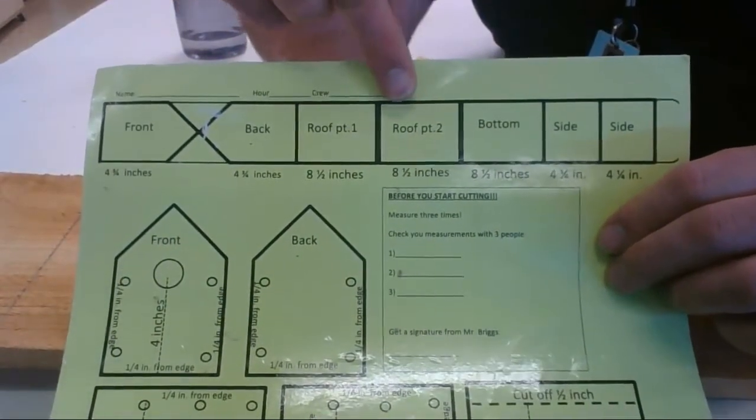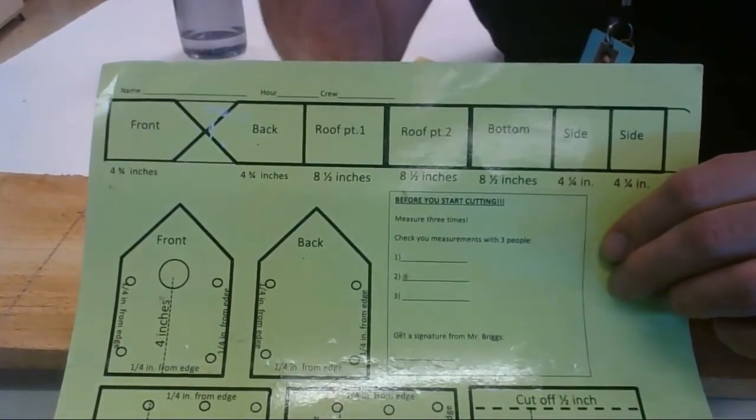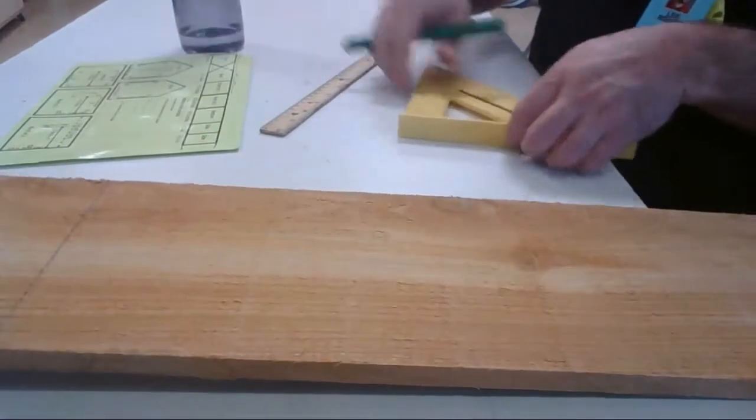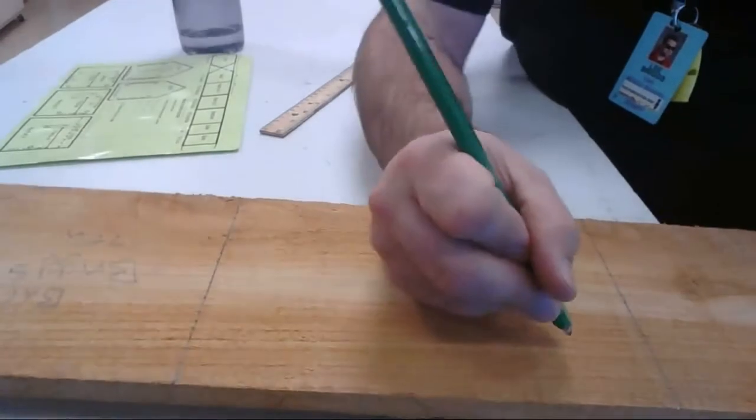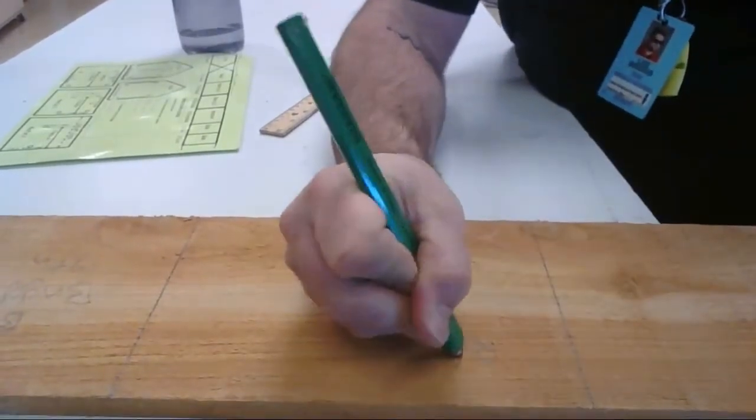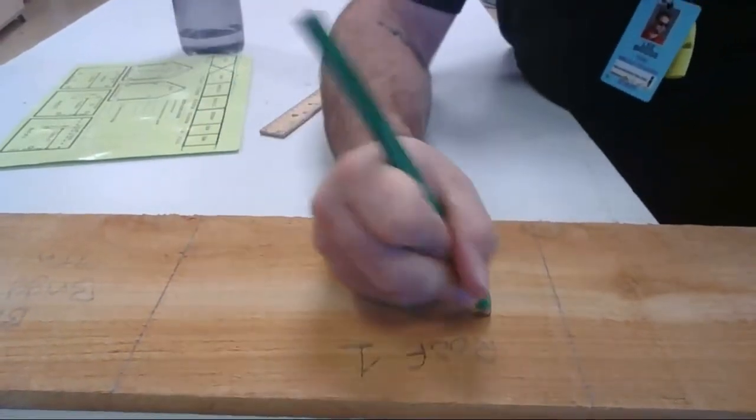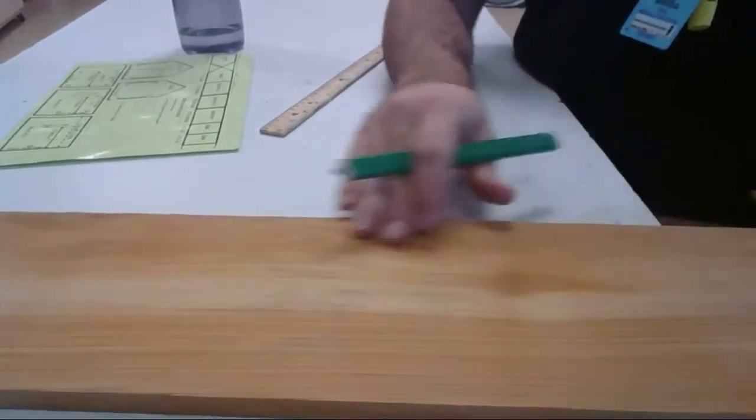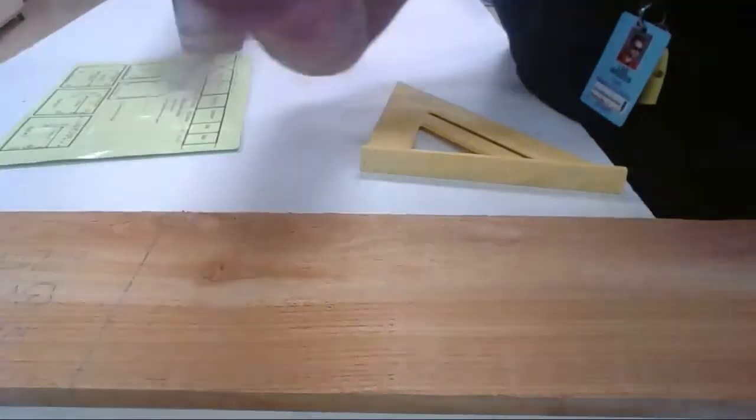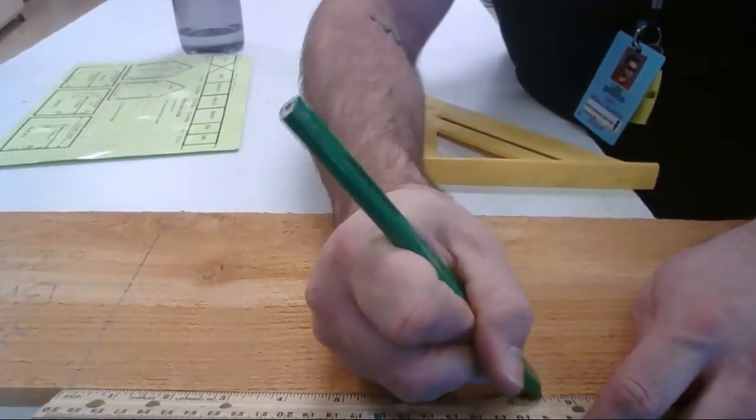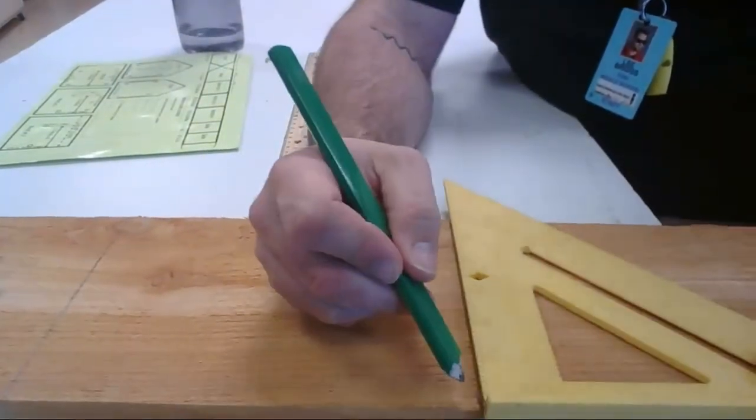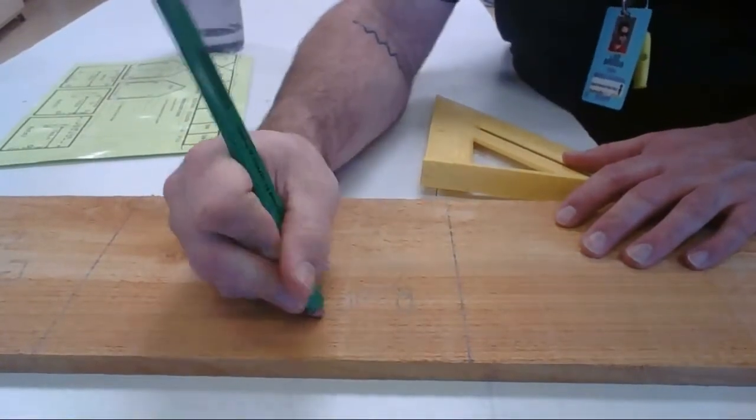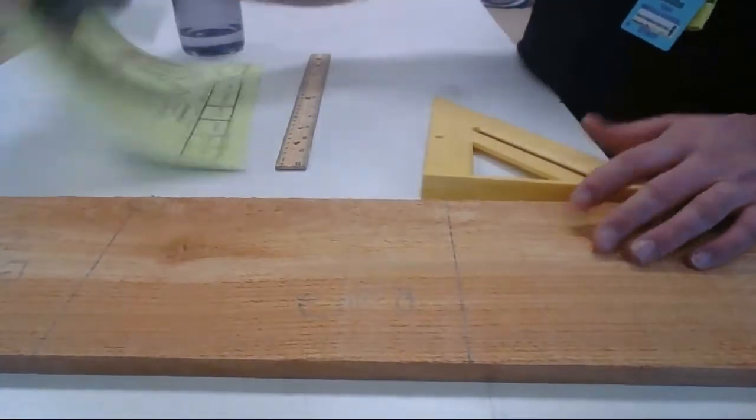Now I've got to do the next part. The next three parts are really simple. The next three parts are the roof, the two roof pieces - they're eight and a half inches each - and the bottom. All of them are eight and a half inches. Eight and a half inches is gonna be easy. I'm gonna go across here, mark eight and a half inches, draw my line heavy and dark, make sure I label it roof one, my name nice and big, the hour nice and big. Gonna do another one at eight and a half inches, use my square tight up against the wood there, roof two.